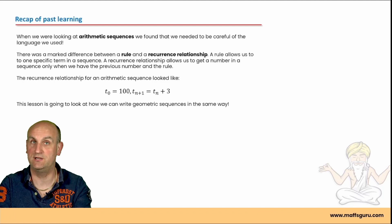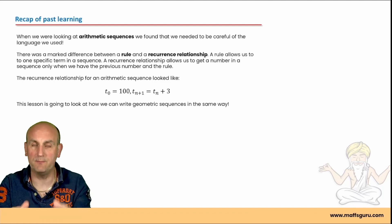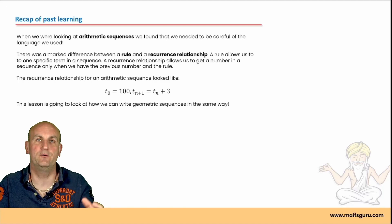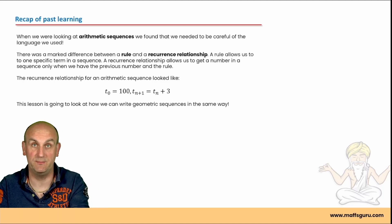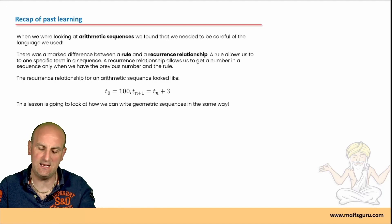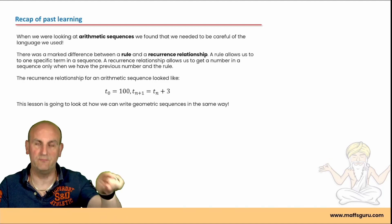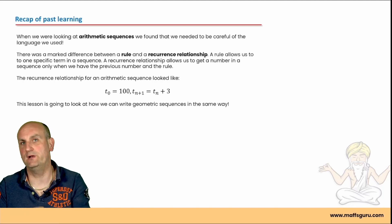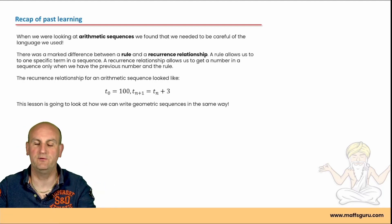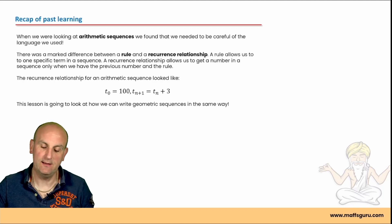When you get to general maths next year, a lot of students trip up with the idea of a rule versus a recurrence relationship. A rule allows you to find any number in a sequence — you don't have to go term to term. A recurrence relationship describes that term-to-term process in formal mathematics.